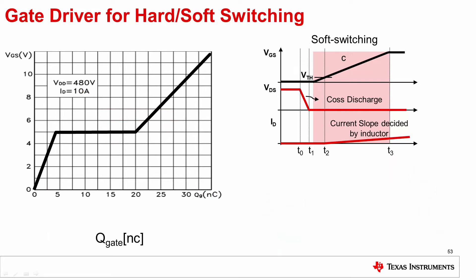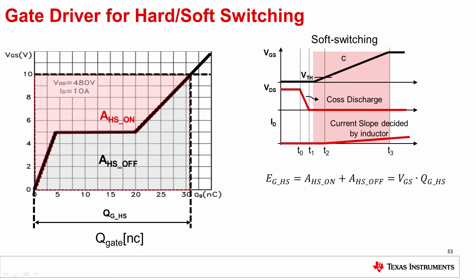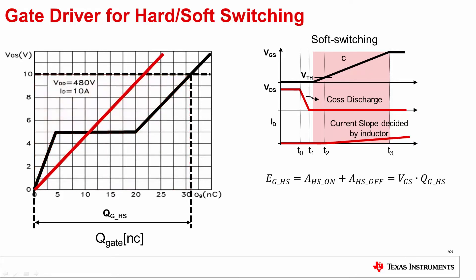The gate driver loss mechanism is also changed. For hard switching, assuming the gate driver voltage is 10V, the shaded on and off areas represent the total loss dissipated in the gate driver circuit. The total energy per cycle is the total gate charge QG multiplied by the 10V VGS. For soft switching, as there is no Miller charge, the solid red line represents the turn-on trajectory, and turning off is similar to hard switching. Compared with hard switching gate driver losses, the loss for soft switching is smaller.